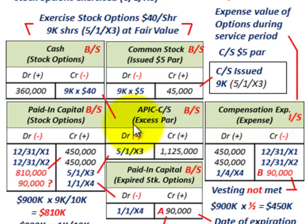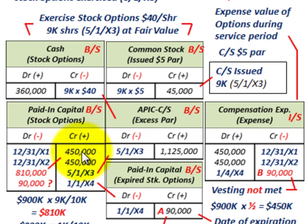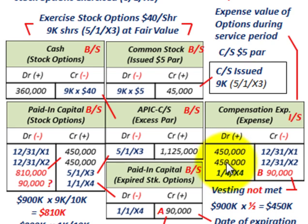The balancing entry goes to the equity account on the balance sheet — paid-in capital for stock options. At 12/31/x1 we credit paid-in capital for stock options $450,000, and at 12/31/x2 we credit it again for $450,000. So we're debiting compensation expense for half the stock option value each year, and crediting paid-in capital for stock options on the balance sheet for that same $450,000 each year.